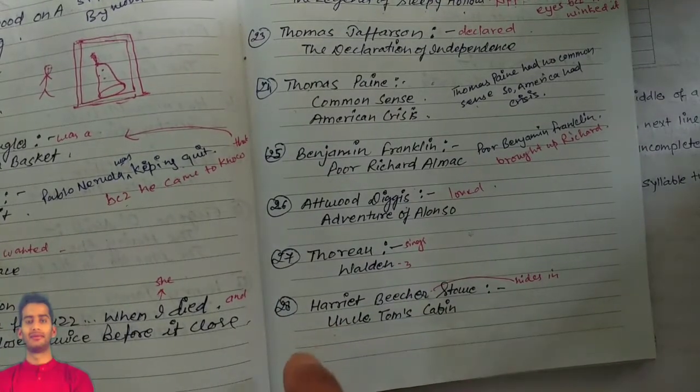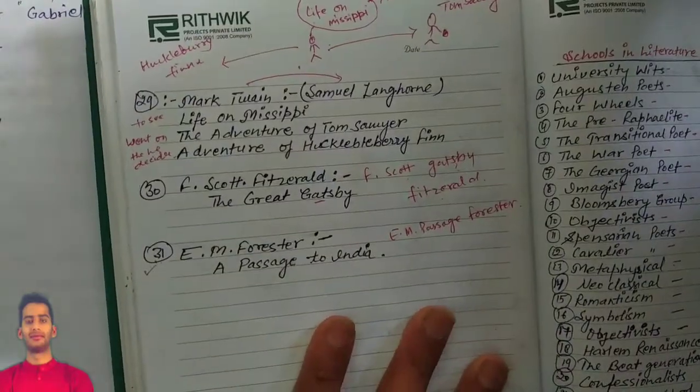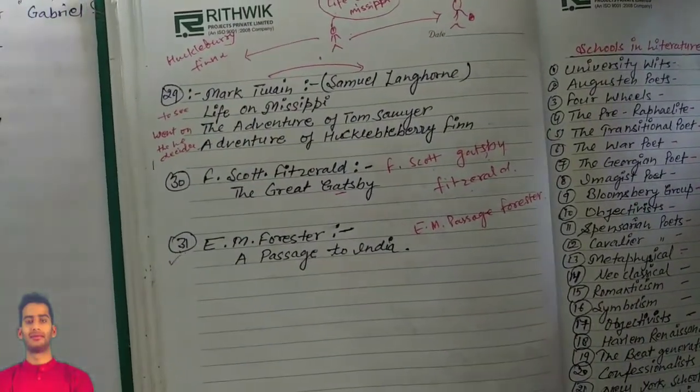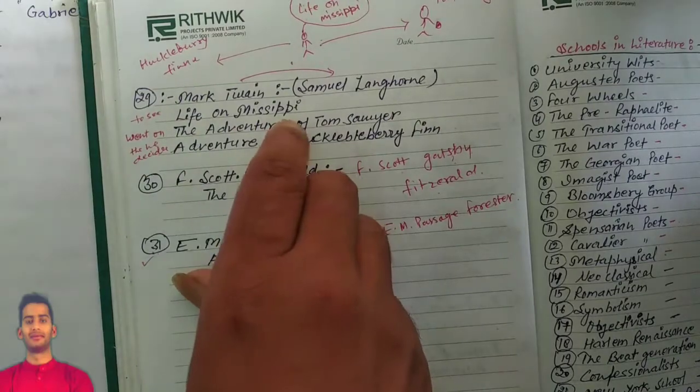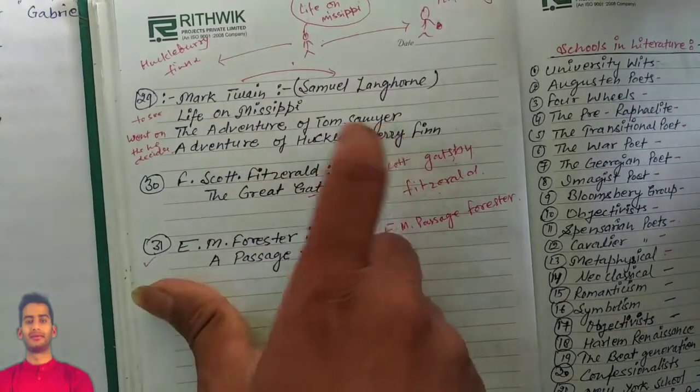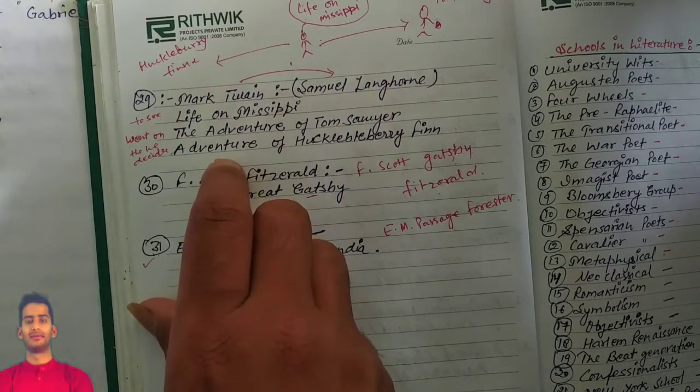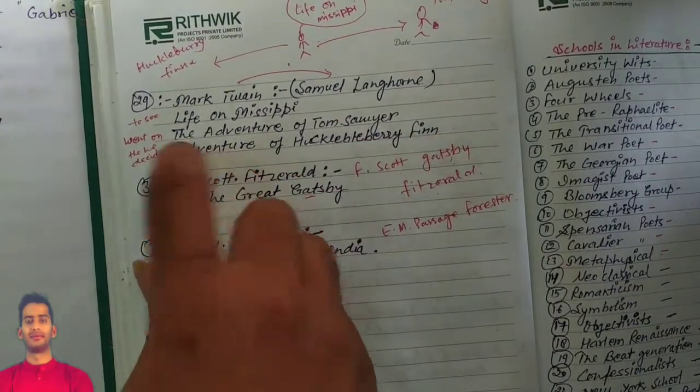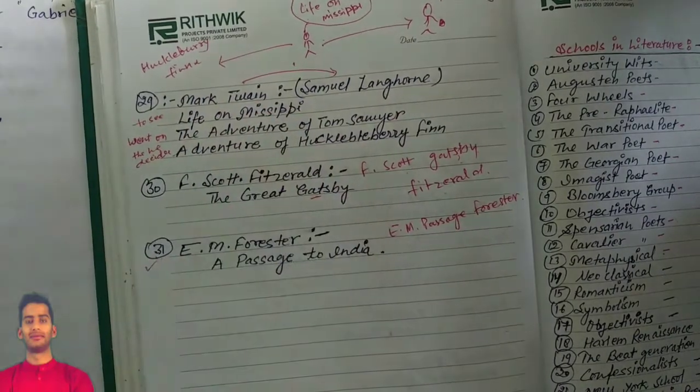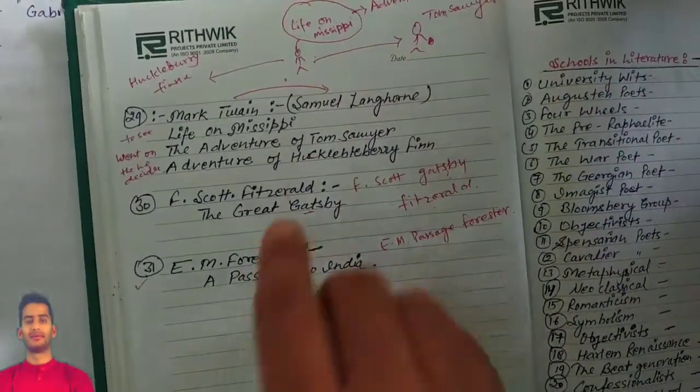Now here are a few. Mark Twain, Samuel Langhorne is his pen name. So Life on the Mississippi, Mark Twain to see Life on the Mississippi went on the Adventure of Tom Sawyer. He decides an Adventure of Huckleberry Finn too. So he went on two adventures to see Life on the Mississippi. So Mark Twain, you can see here Life on the Mississippi, and he wanted to do adventure. He went with Tom Sawyer and Huckleberry Finn to see Life on the Mississippi.